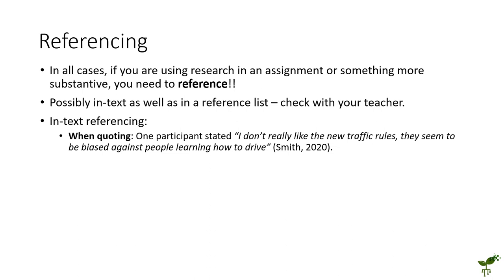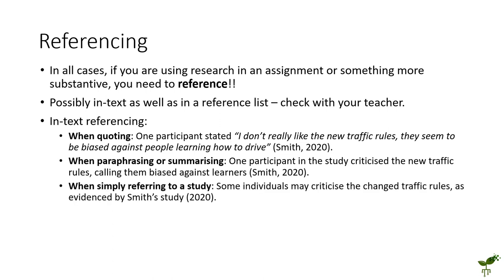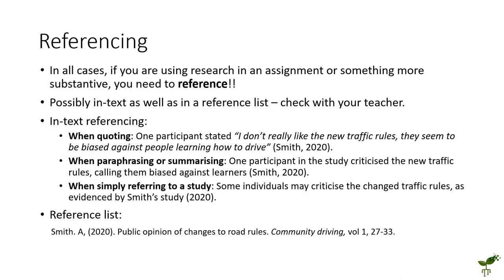When quoting, an in-text reference would include the last name of the author or multiple authors and the date of publication at the end of the quote. When paraphrasing or summarizing, similar approach — you'd have the author's name as well as the date somewhere in the sentence towards the end, with the difference being there's no actual quote. When simply referring to a study, you can refer to it by name but would still include the last name of the author as well as the date. In all of these cases there would be a corresponding full reference in the reference list, including details of the journal and where to find it.